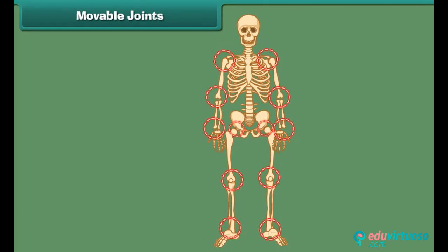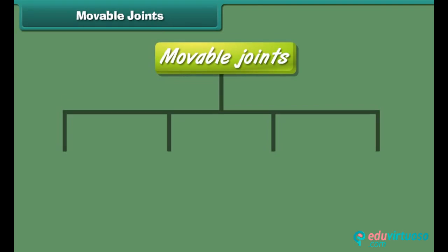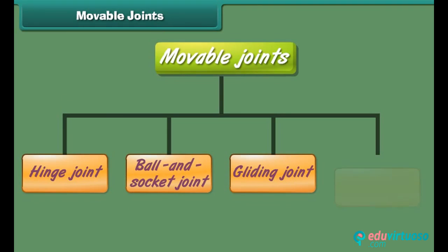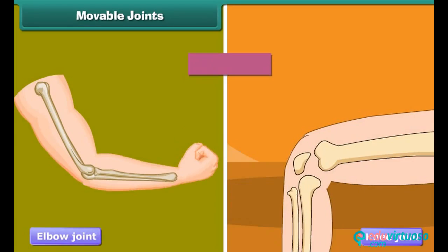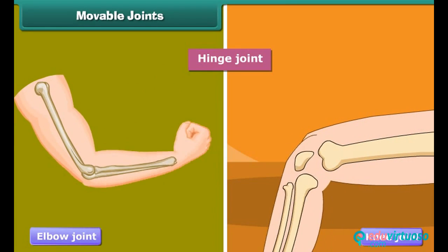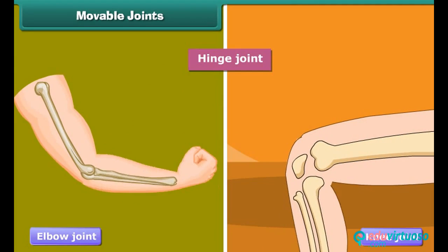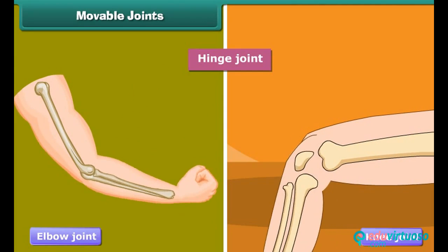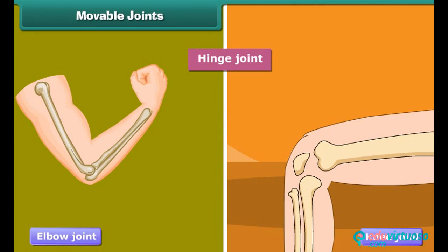Most movable joints allow free movement of the body parts, whereas in some joints only a little movement is possible. Movable joints are grouped into four types on the basis of movement. The first type is the hinge joint — these are joints which can be bent in only one direction. For example, the elbow joint and the knee joint.